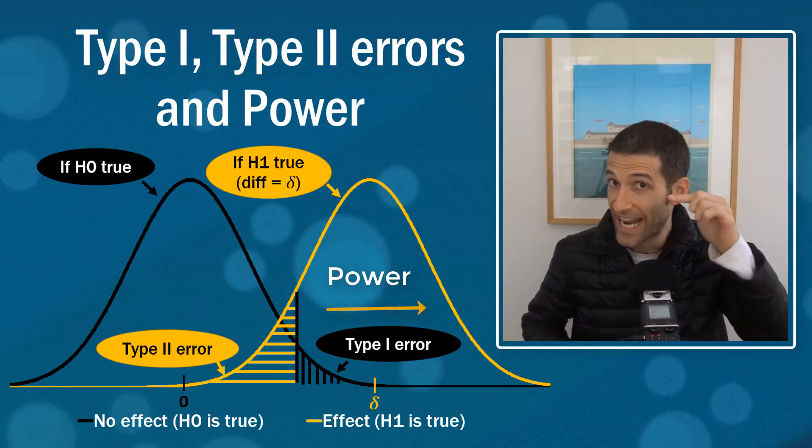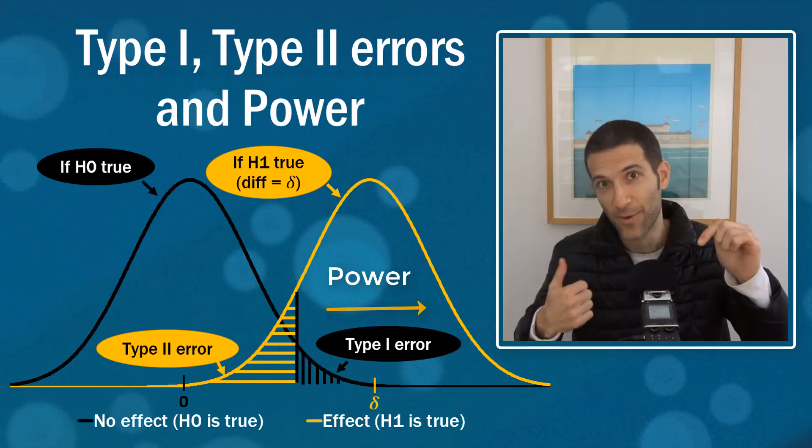Type 1 and type 2 errors are critically important to the study of hypothesis testing, but they're often quite misunderstood, as is the concept of statistical power. This video deals with all three in a really neat way. By the end, you'll understand exactly what this graph is all about, this one over here.